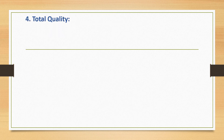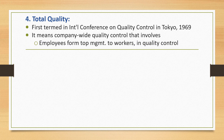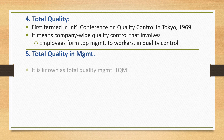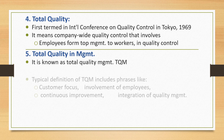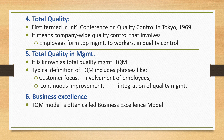Next is total quality, which was first termed at the International Conference of Quality Control in Tokyo in 1969. It means company-wide quality control involving employees from top management to workers. Total Quality Management, or TQM, is the resulting concept. A typical definition of TQM includes phrases like customer focus, involvement of employees, continuous improvement, integration of quality, and quality management. TQM is often called the business excellence model.